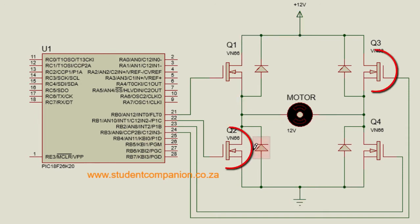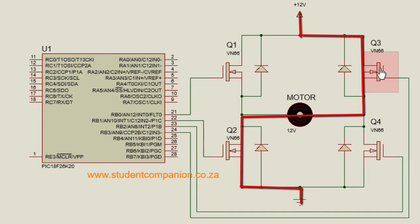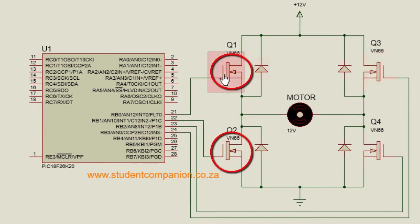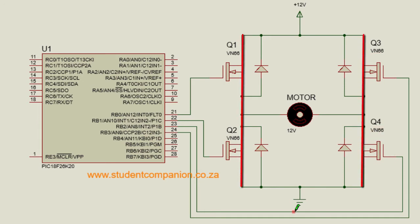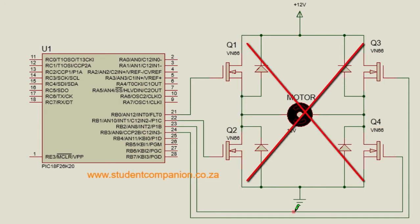If Q2 and Q3 are turned on, the reverse will happen. The motor will rotate in reverse direction or anti-clockwise direction. You should never turn on Q1 and Q2 or Q3 and Q4 at the same time as you'll short circuit your power supply. This will destroy your bridge or something else in your circuit.